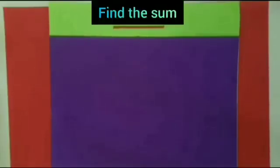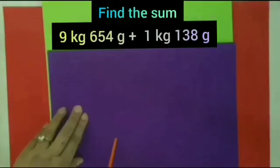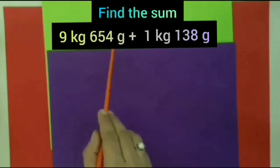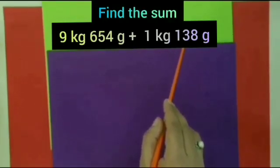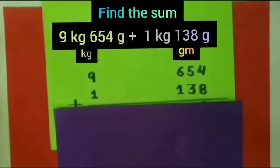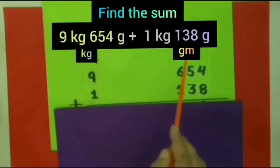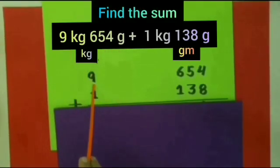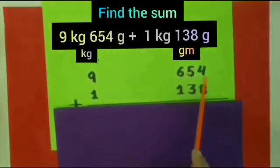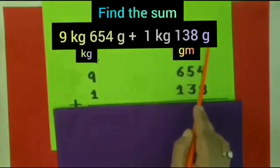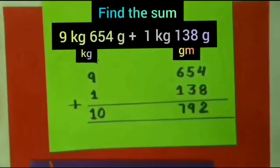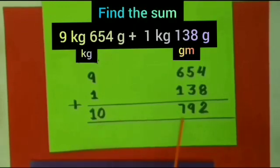Dear students, it's time to do some written practice. Now we will learn how to add units of weight. We have to add 9 kilograms 654 grams and 1 kilogram 138 grams. We write 9 kilograms below kilograms and 654 below grams. In the same way, we write 1 kilogram and 138 grams. When we add these numbers, the total weight will be 10 kilograms and 792 grams. So the answer is 10 kilograms and 792 grams.